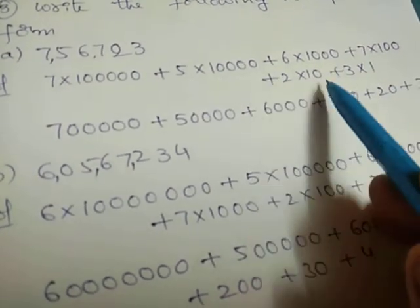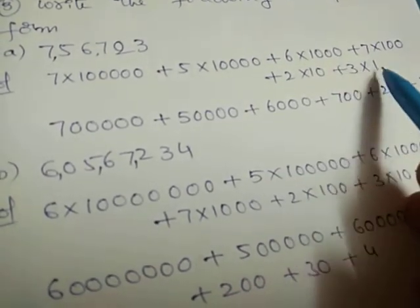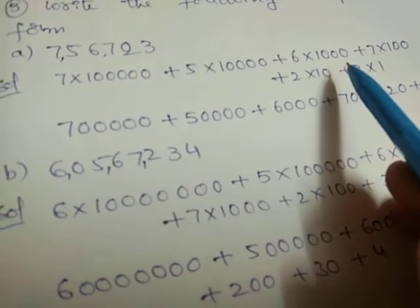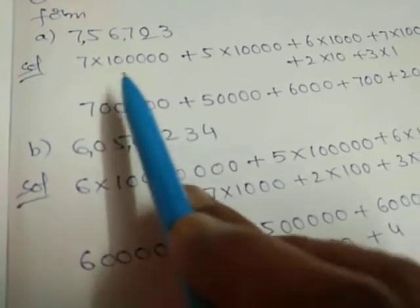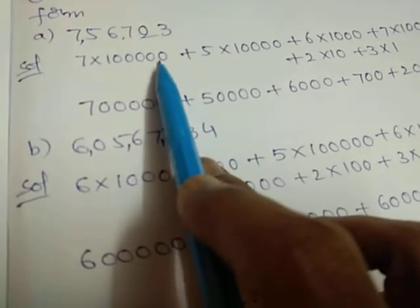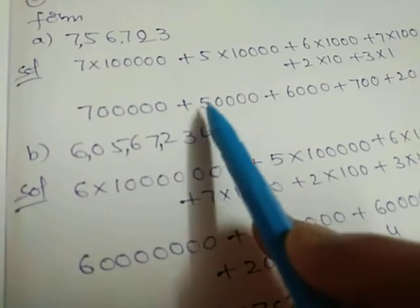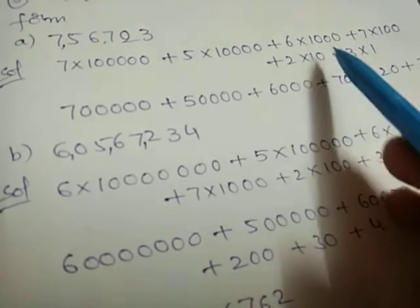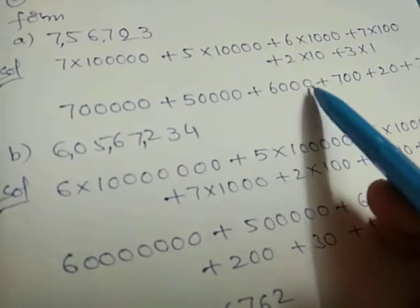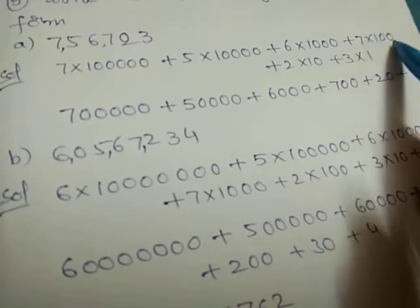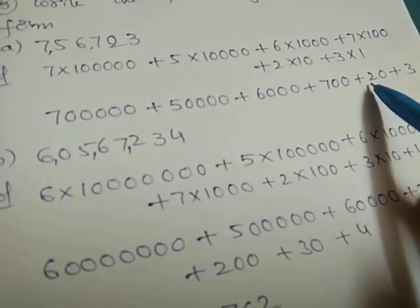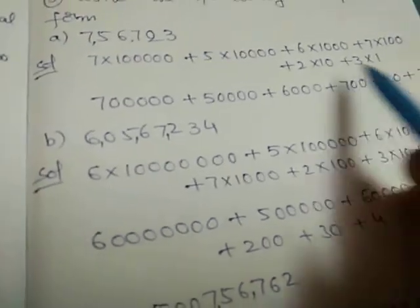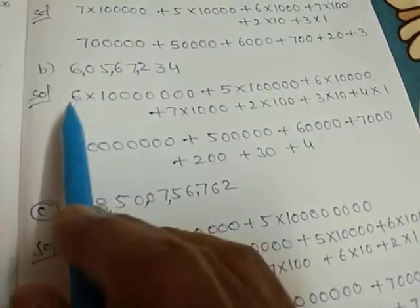Continuing: plus 2 × 10 plus 3 × 1. Multiply each digit by its place value: 7 lakhs + 50,000 + 6,000 + 700 + 20 + 3. So this is the expanded form of the first number.